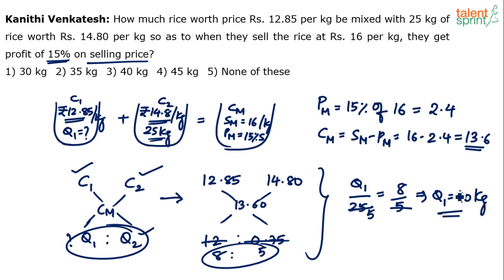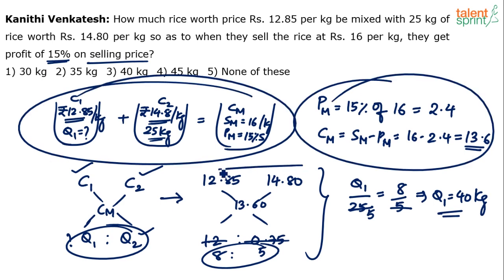You can avoid a lot of these steps — don't do all this in the exam. The drawing and detailed calculations can all be done mentally. Just properly apply the alligation rule, find the first quantity, and the answer is 40 kg — option 3.